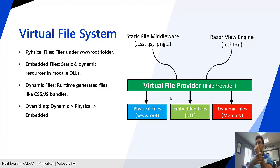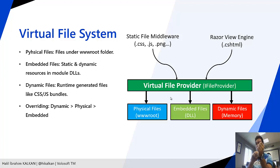The virtual file system implements the IFileProvider interface and internally works with embedded files, physical files, and even dynamic files that can be created at runtime. Because it implements IFileProvider, it can work with static file middleware and the Razor View Engine, so ASP.NET Core can work with embedded files in this way.